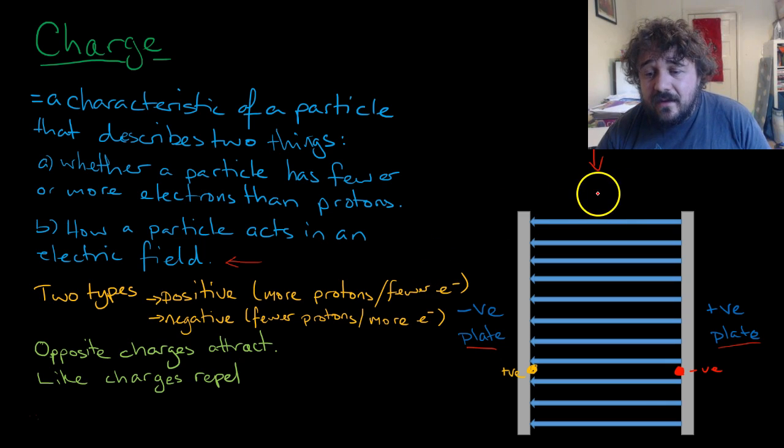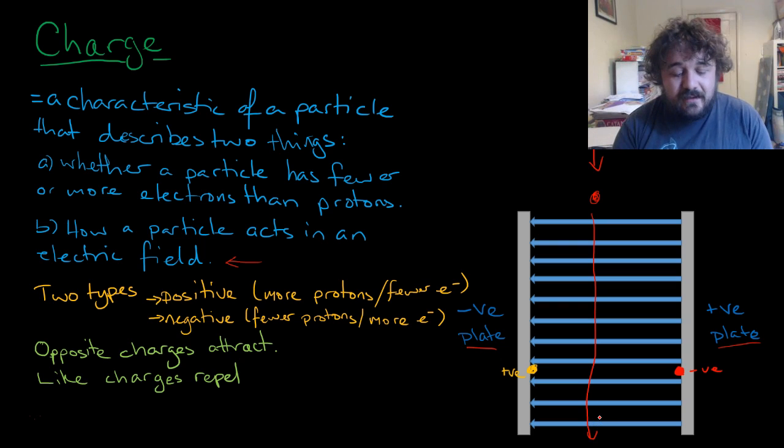If we had a neutral particle, it would go straight through unaffected at all.